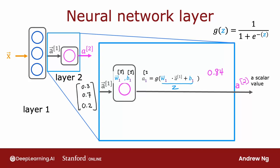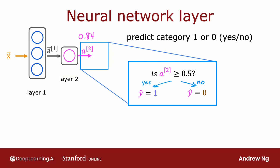Using our notational convention, we use superscript square brackets two to denote quantities associated with layer two, so a superscript square bracket two is the output of this layer and the final output of the neural network. Once the neural network has computed a superscript square bracket two, there's one final optional step: if you want a binary prediction — is this a top seller, yes or no — you can take the value 0.84 and threshold it at 0.5.